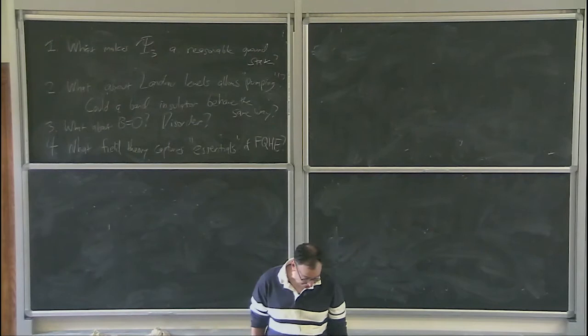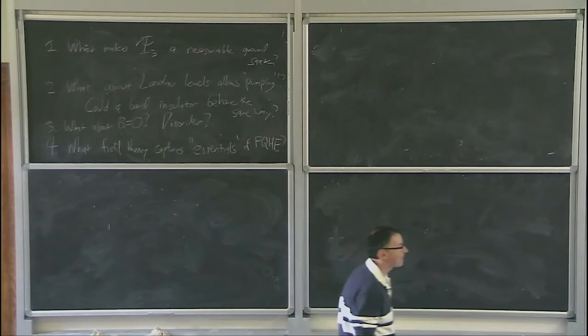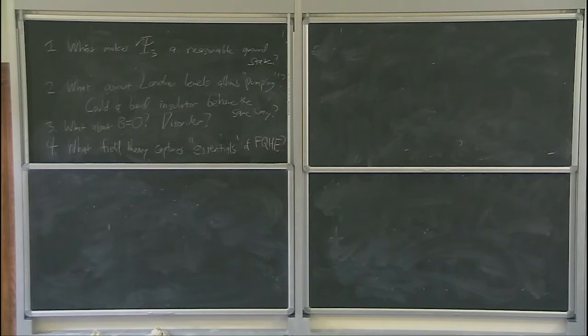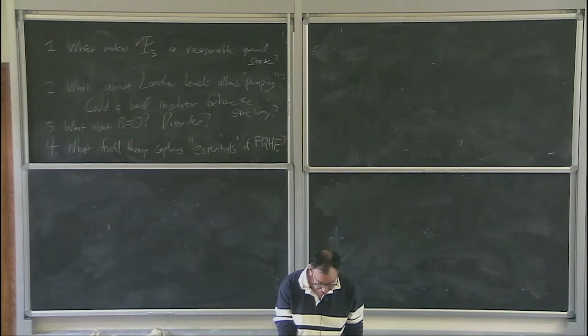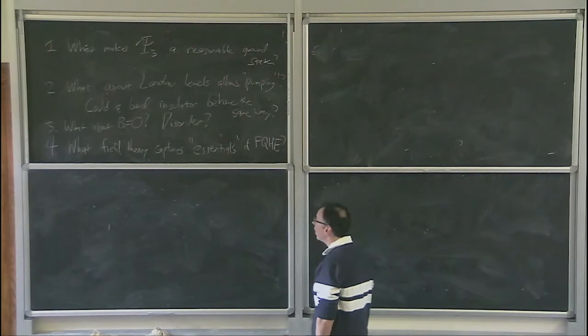This is a function of magnetic field. At low fields you see this smooth dependence. But if you make the field larger, you get these regions. These are incredibly flat. The value in the central part of a plateau is n e squared over h to something like 1 part in 10 to the ninth. If you make a very clean sample, you don't just see e squared over h or 2 e squared over h. You see these many little plateaus corresponding to densities that are many different odd denominator fractions.